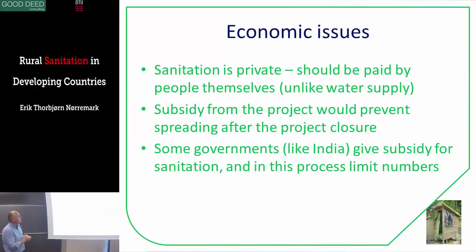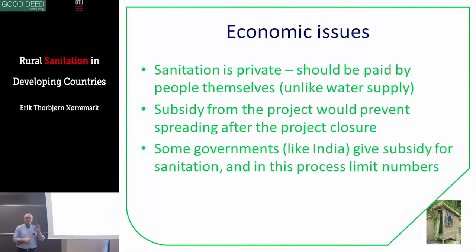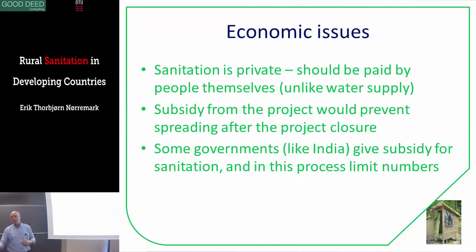On economic issues: sanitation is private — it should be paid by the people themselves. Water supply is different because you share it, so a different economic model applies there. Many projects give subsidies to get things moving, but the problem is that when you stop the project and stop the subsidy, all activities stop. Try to make an implementation model where you don't actually pay for people's latrines, because the day you leave and stop paying, there are no more activities. That's problematic when 2.8 billion people still need latrines. We need to do it in a way where they can continue after we leave — we're just moving on to the next village, but we'd like the first village to keep going.